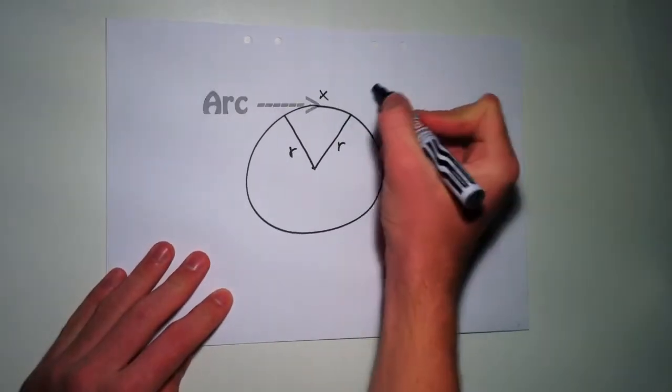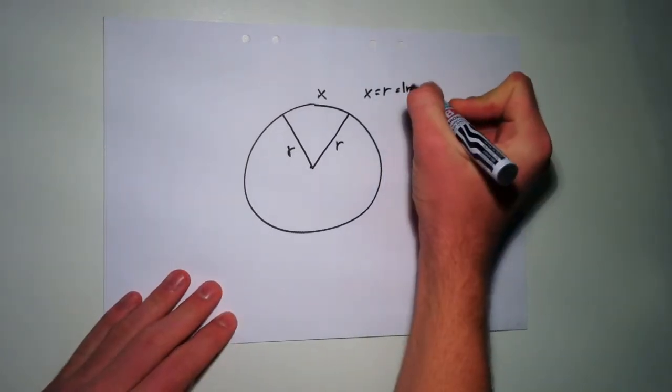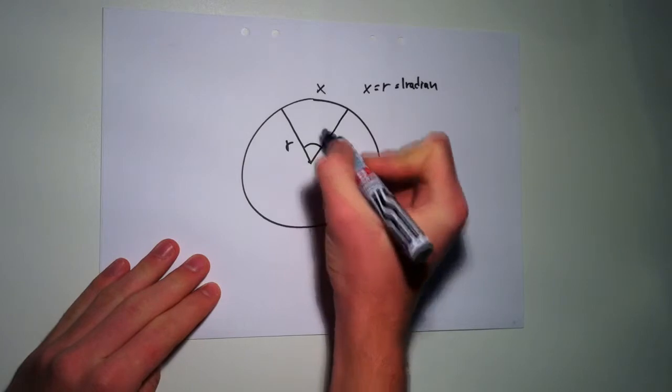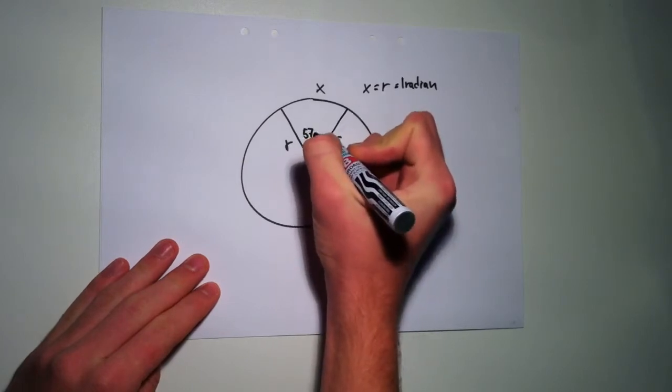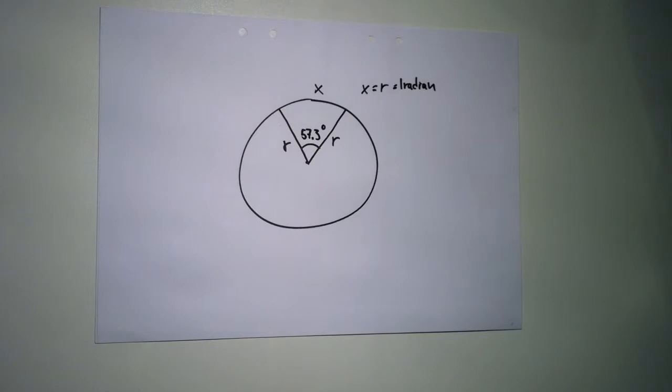If we draw this line so the r has the exact length as one of the radius lines, we will get what is called one radian. And if we measure the angle between the two lines, we will get around 57.3 degrees. This means that one radian is around 57.3 degrees.